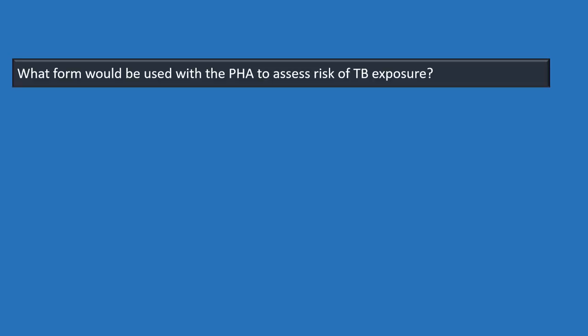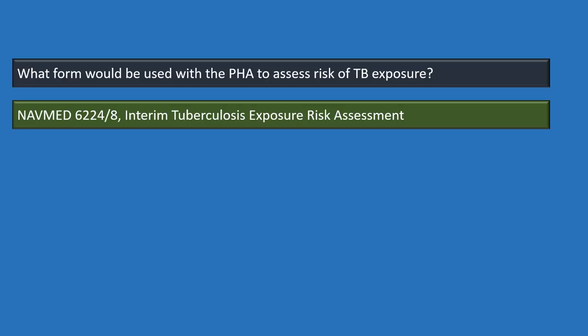Starting with tuberculosis. The tuberculosis instruction is BUMED 6224.8 Bravo. The form used with a PHA to assess the risk of tuberculosis exposure is NAVMED 6224 Slant 8, the interim tuberculosis exposure risk assessment, filled out annually.